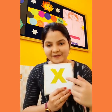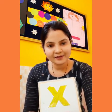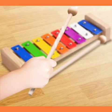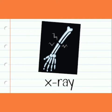Okay. Now children, let's see some other words which start with X. X is for xylophone. It's a musical toy for you all. X is for x-ray. It's a machine which can show the bones of our body which are inside our body.